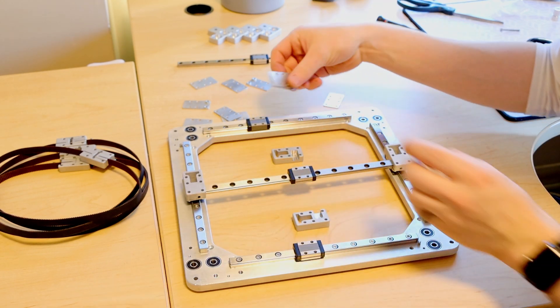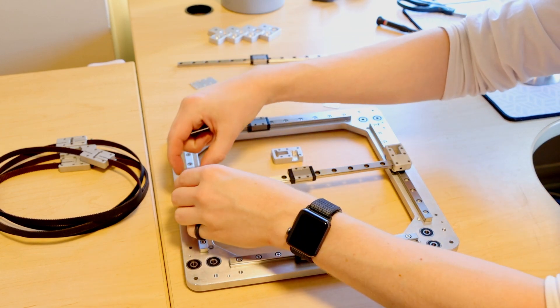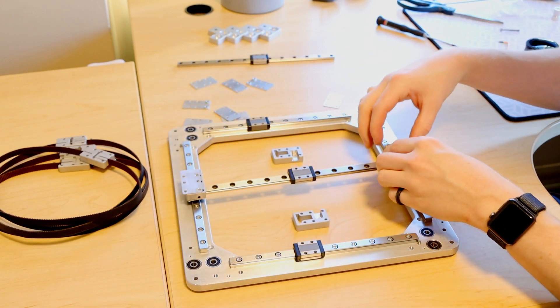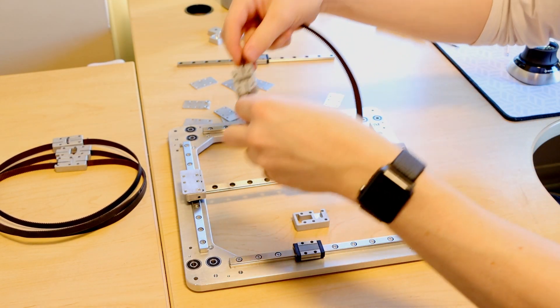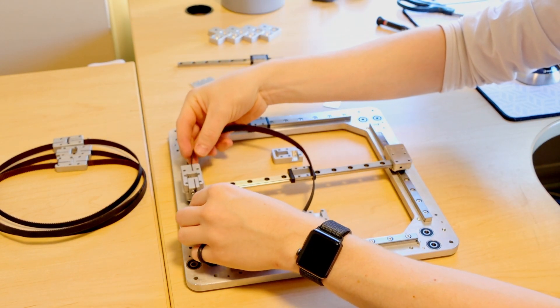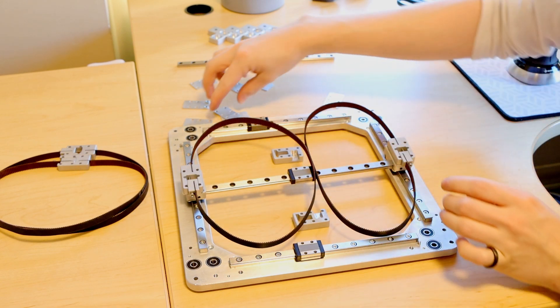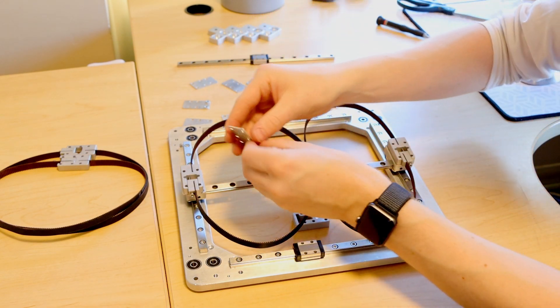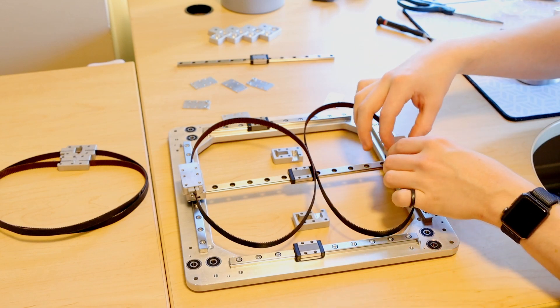The next step will be to put two of these spacer plates into the stack and finally we can put in two of the belt tensioners that we just put together. Finally we will top it off with another set of the spacer plates.